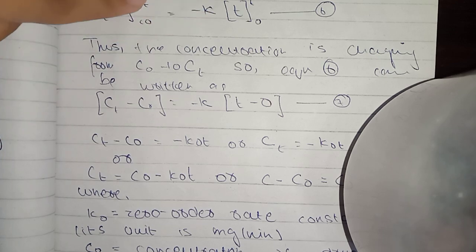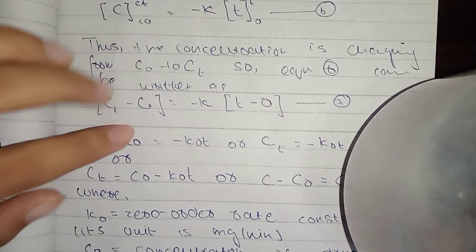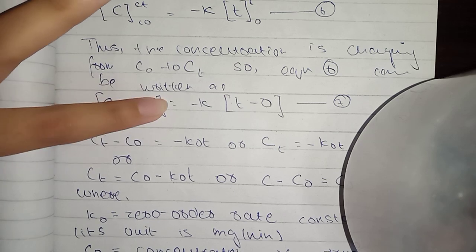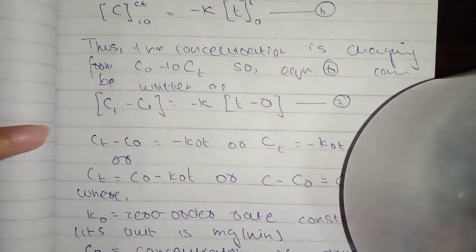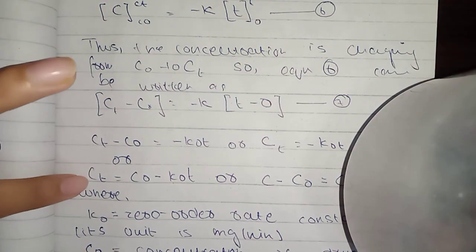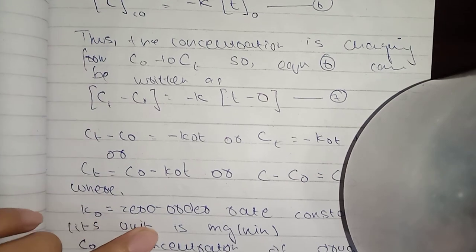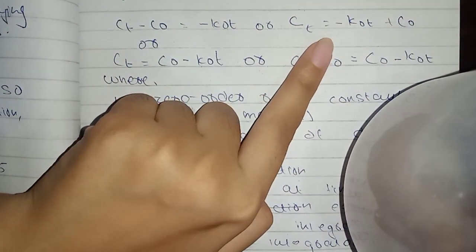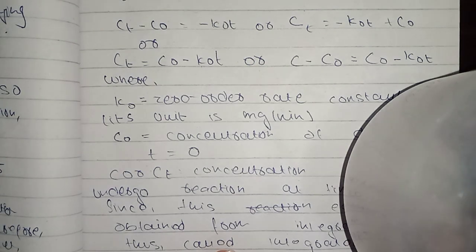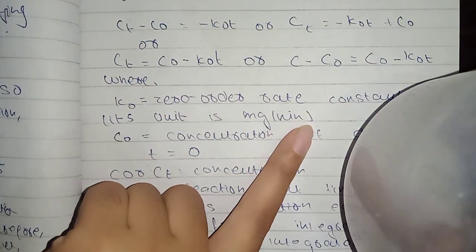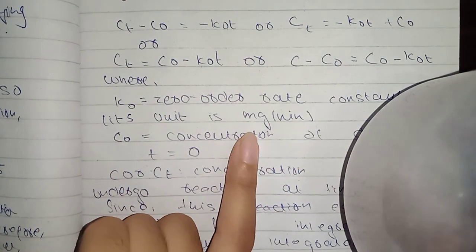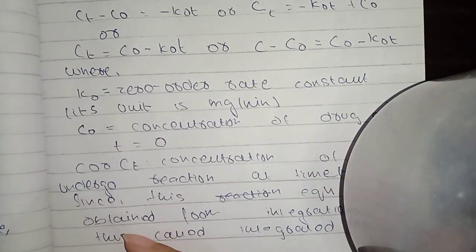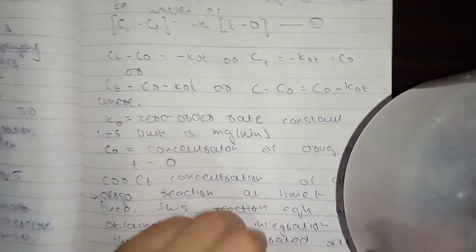After rearranging, we get the final zero order equation: CT = C0 - KT. Here K0 is the zero order rate constant with units of mg per minute, and CT is the concentration of the drug at time T. We will solve some examples on another page to make this easier to understand.